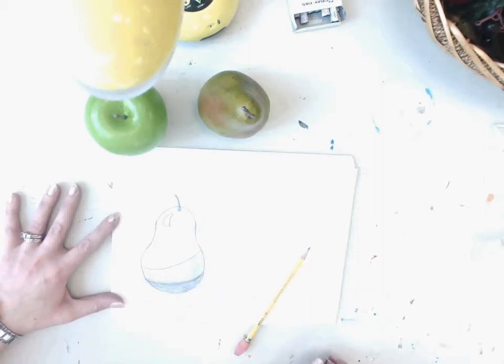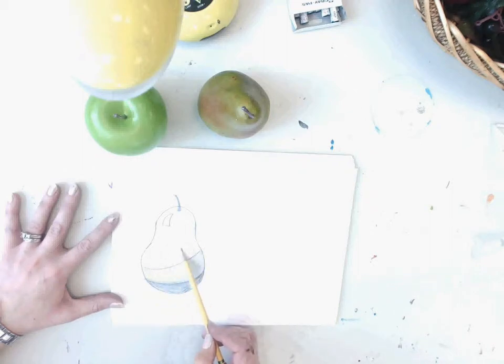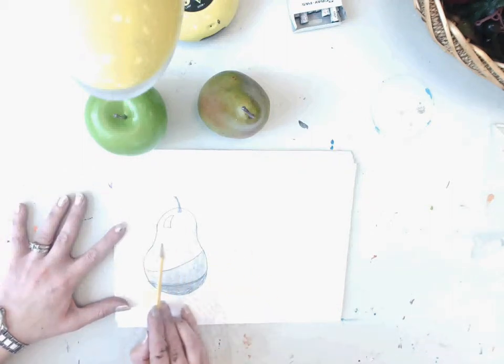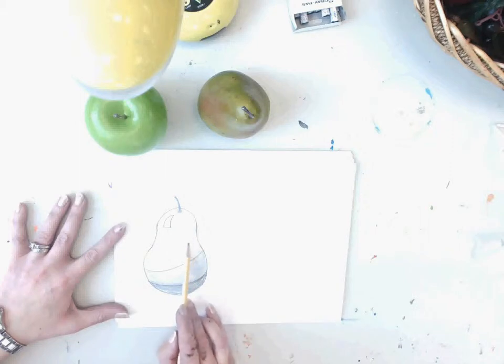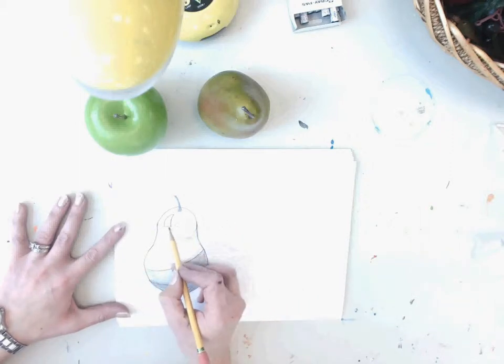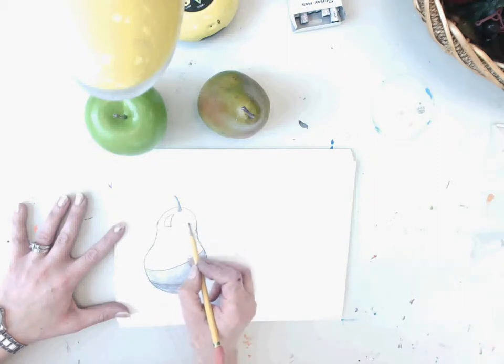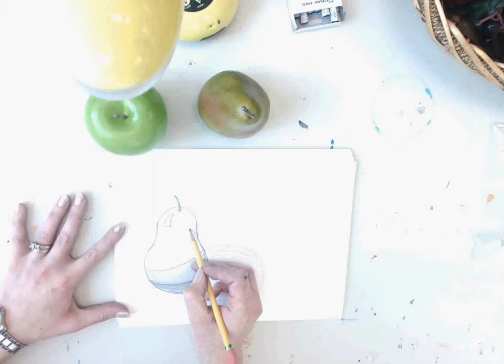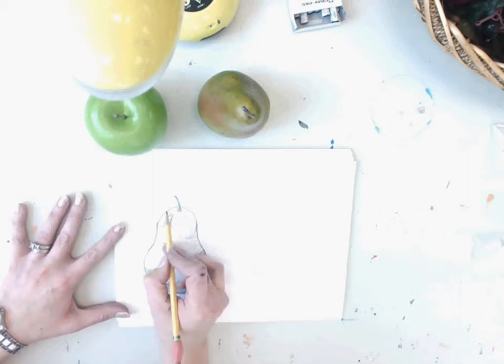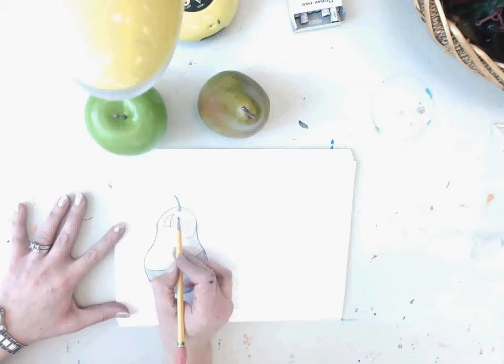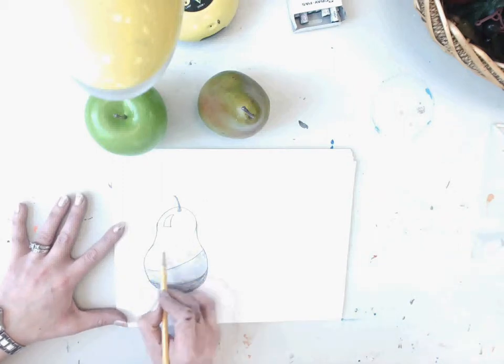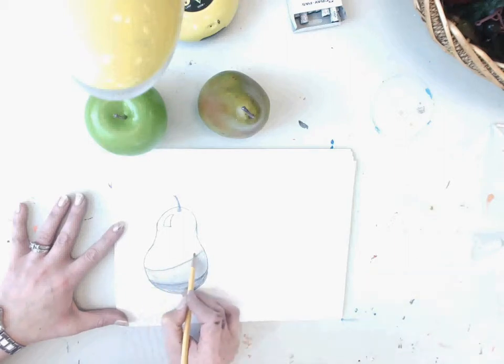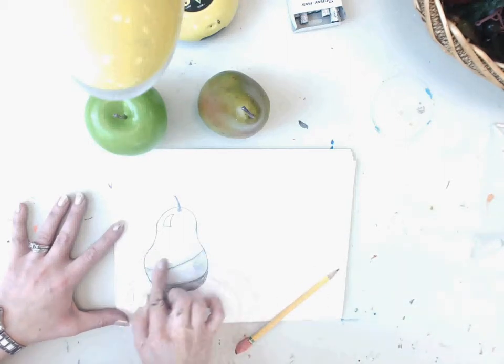My last tone is going to be my lightest. I'm going to lightly shade my pear, again using the curves. I'm not going to touch that highlight area. At the top, it's going to be smaller curved strokes to make it look more three-dimensional. Spending a little bit of time between the two tones to even them out. Then I'm going to use my finger again and blend.